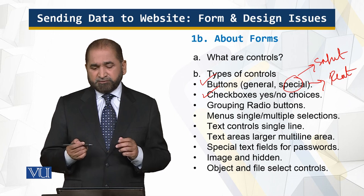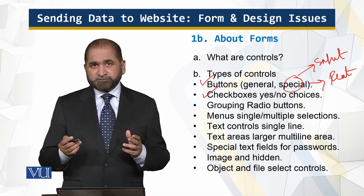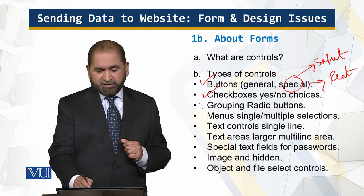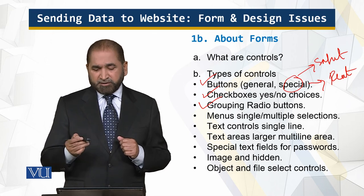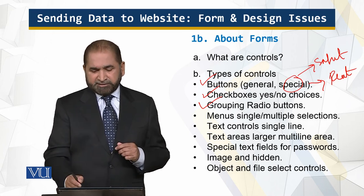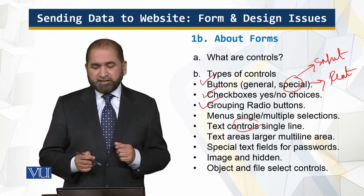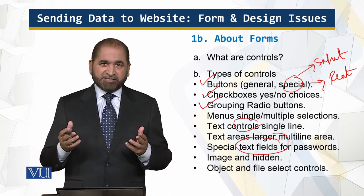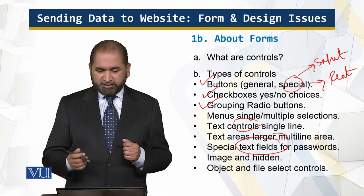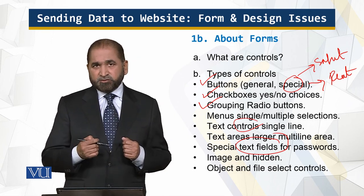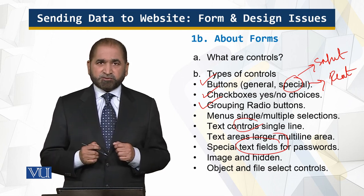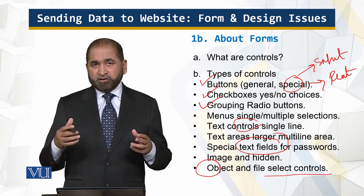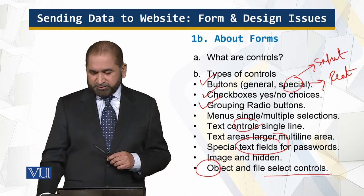I can have a group of radio buttons, and remember, in radio buttons only one choice is selected at a time. I can also have menus, which allow selecting one or multiple items. There are text boxes — single line or multiple line — and specialized text fields used for passwords, which don't display what is typed. I also have image fields, hidden controls, and object and select controls. That's the whole list of controls, which will be covered in this and subsequent modules.